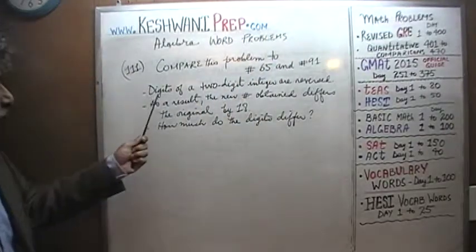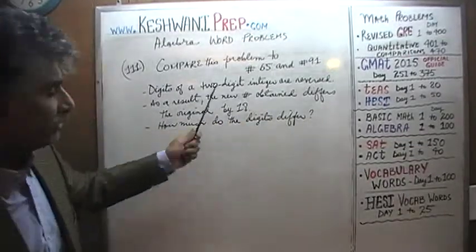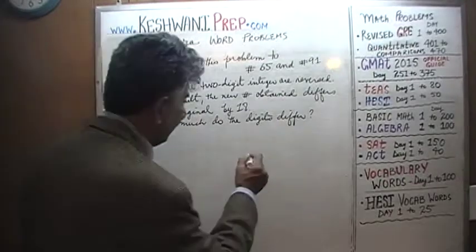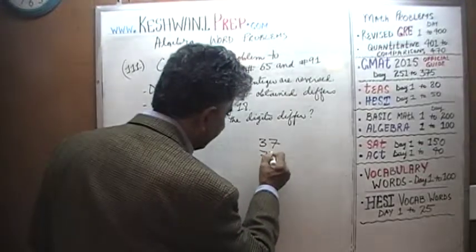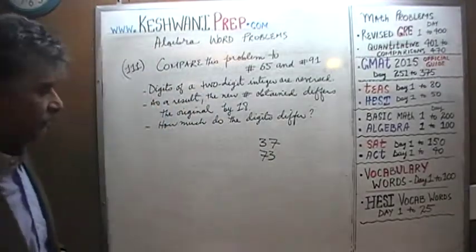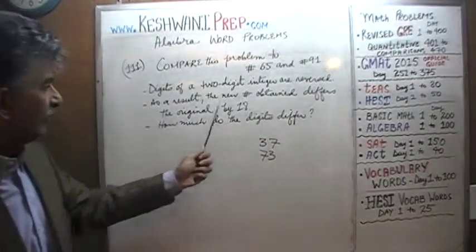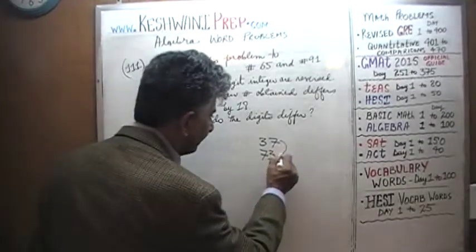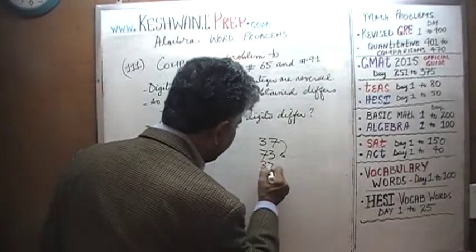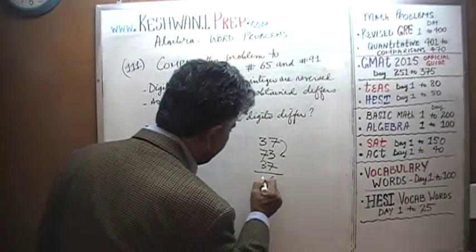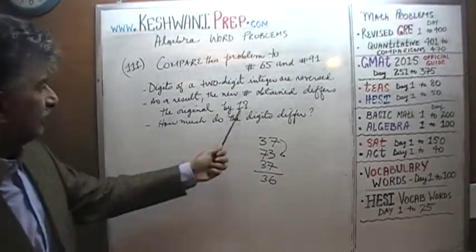Let's take a look at it. We are told that the digits of a two-digit integer are reversed. We don't know what that two-digit integer is. Say for example if it's 37, our job is to reverse the digits — 37 becomes 73. And we are told that as a result, the new number obtained differs from the original by 18. As you can see, 37 does not differ from 73 by 18 — it differs by 36.